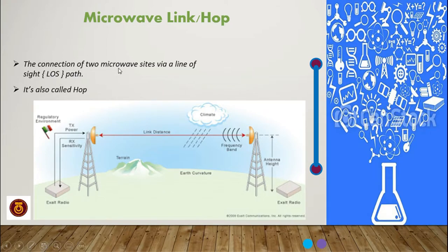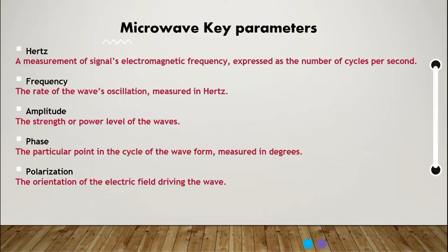Microwave key parameters. We have hertz, which is a measurement of signal electromagnetic frequency expressed as the number of cycles per second. And we have frequency, which is the rate of the wave's oscillation measured in hertz.